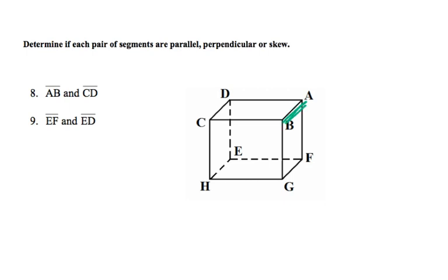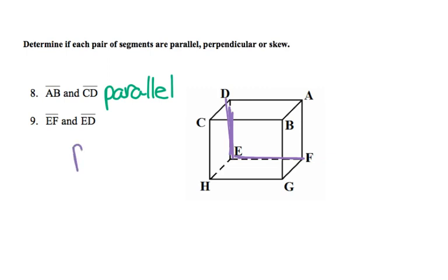Lines A and B and C and D are both going left to right. They will never intersect, so this will be parallel. Lines EF and ED do meet in the corner forming a right angle, so this will be perpendicular.